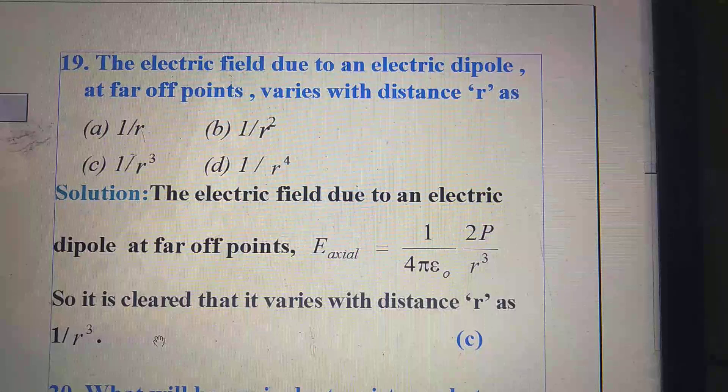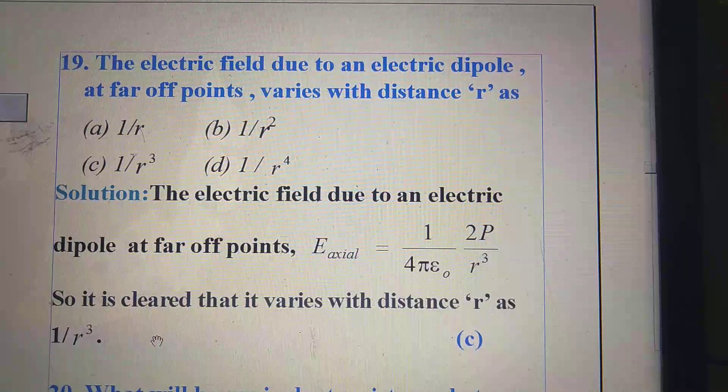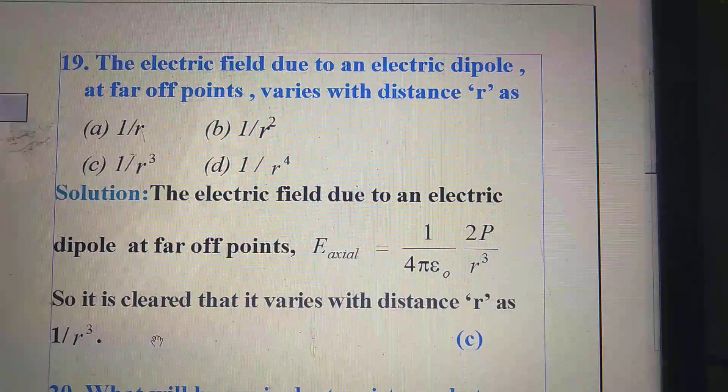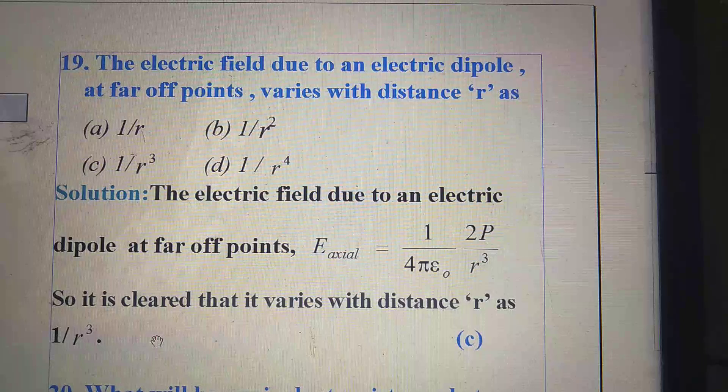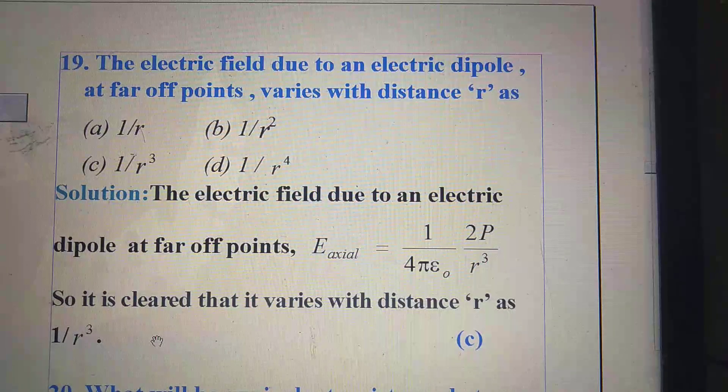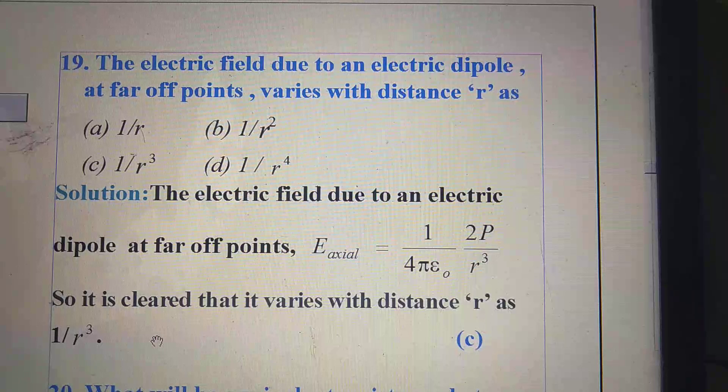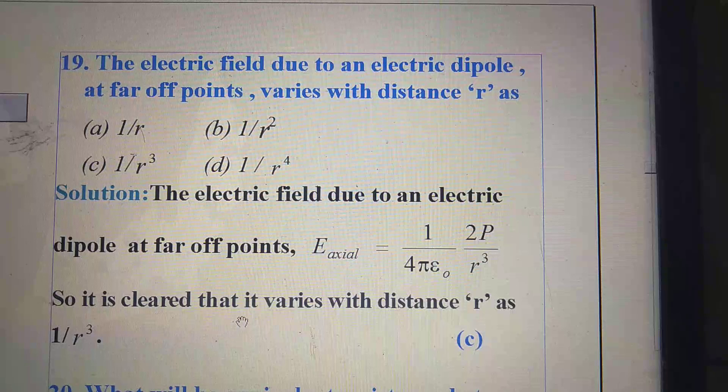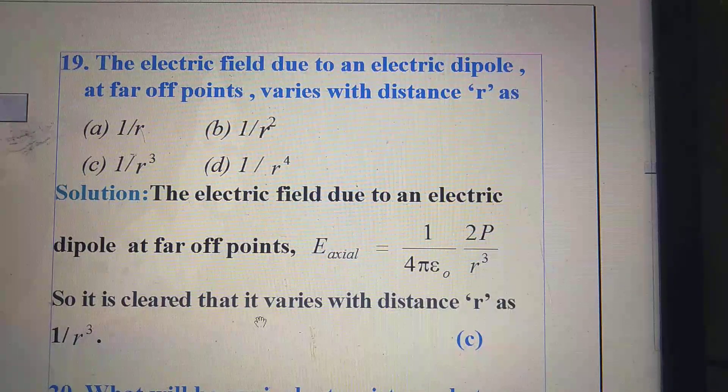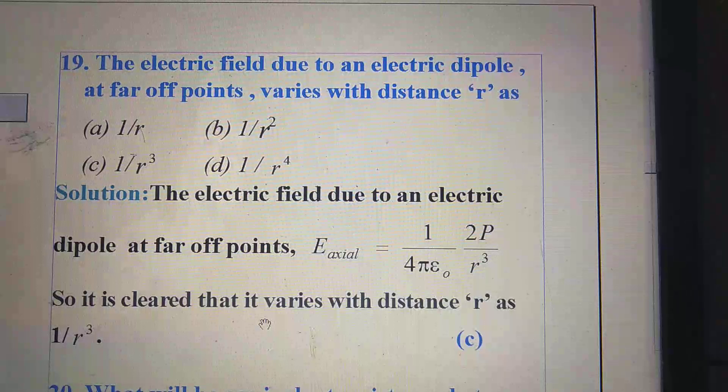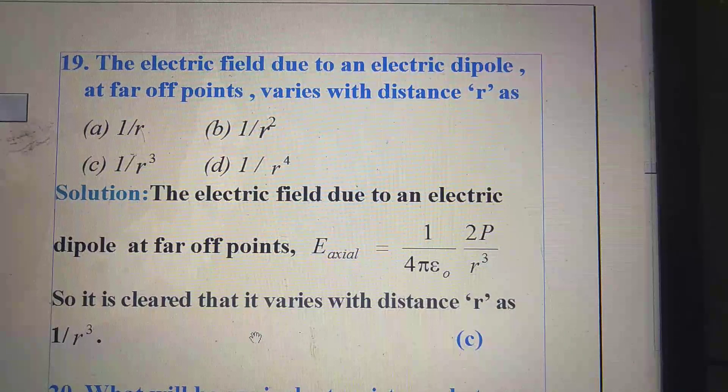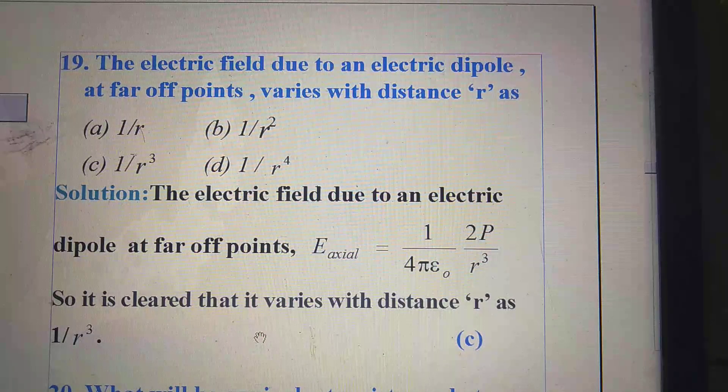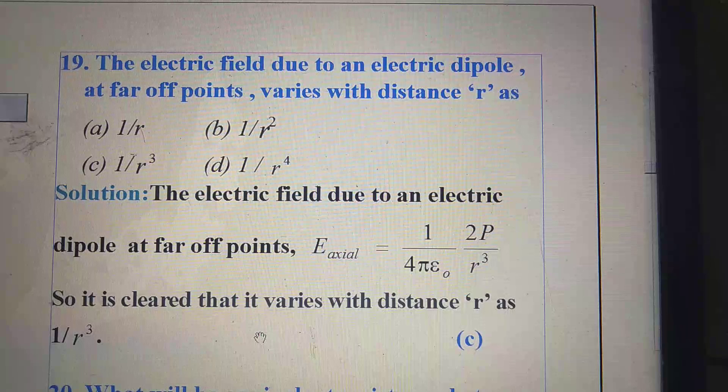This is a knowledge-based question. Here we have to know the formula of electric field due to an electric dipole at far off points. E axial is equal to 2P by 4 pi epsilon naught R cube. So, it is very much clear from this formula. Electric field is proportional to 1 by R cube. So, right option is C.